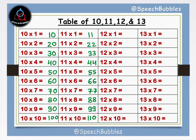Now we will see the table of 12. 12 1s are 12, 12 2s are 24, 12 3s are 36, 12 4s are 48, 12 5s are 60.